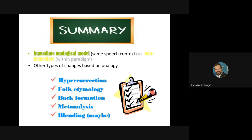The non-immediate model works within the same paradigm. This happened, for example, with English irregular comparisons of adjectives, where a new regular system was created but old forms like 'next' became separate words — so 'nigh, near, next' became 'near, nearer, nearest.' That's the summary of last week.